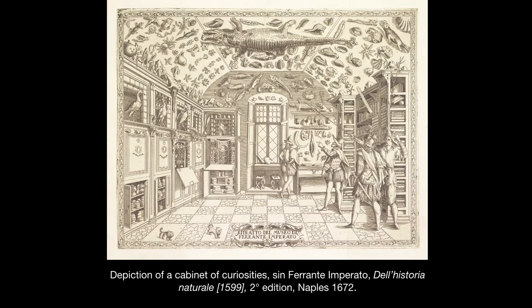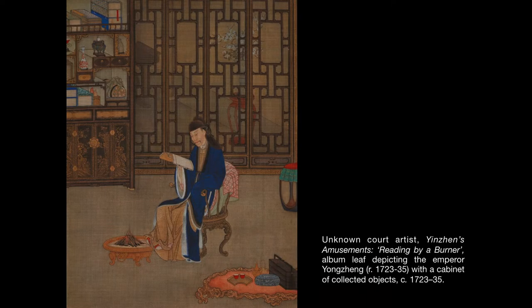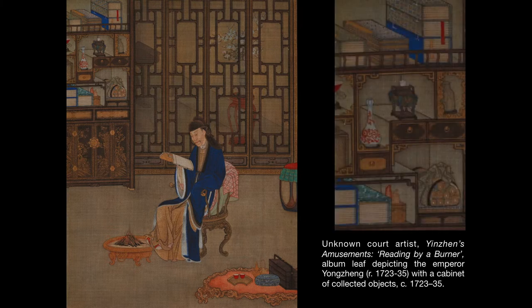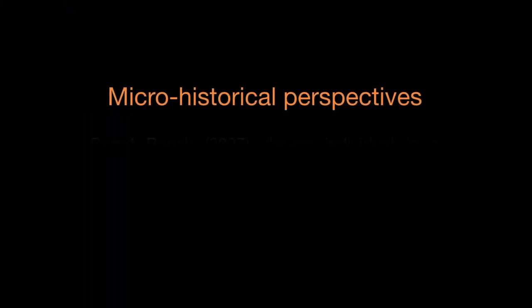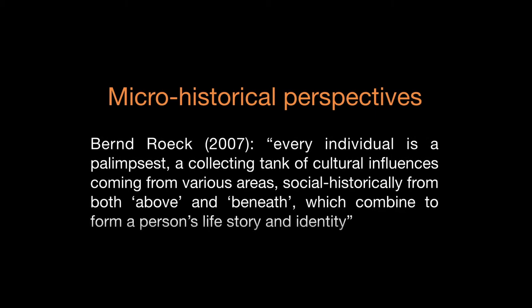Their displacements show the many trajectories they could follow and how they were collected. At the same time, artworks themselves were the product of the integration of elements from different cultural traditions. Stated by the scholar Bernd Roek, objects and people can be seen as a palimpsest — a collecting tank of cultural influences coming from various areas — and so we can study the micro-history to shed light on the wider cultural connections in which they operated.